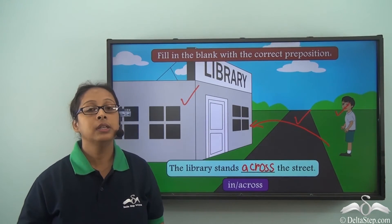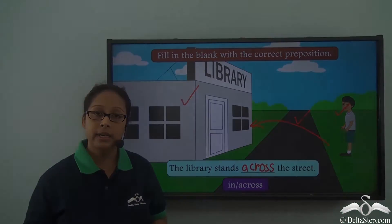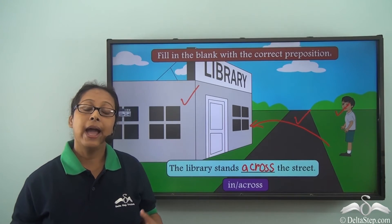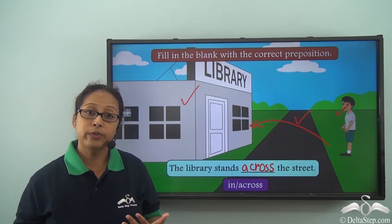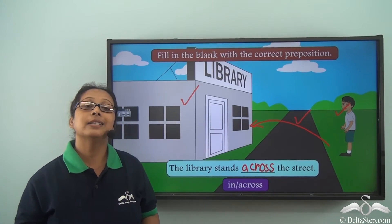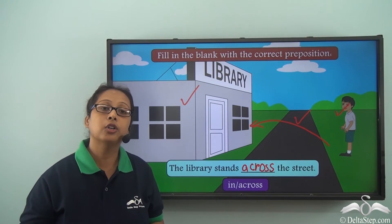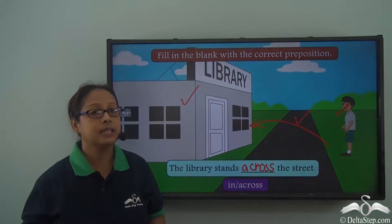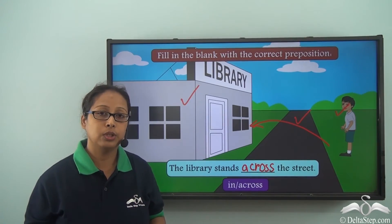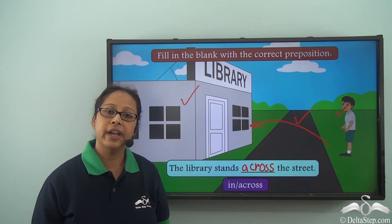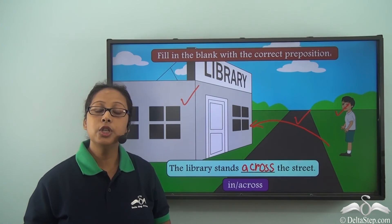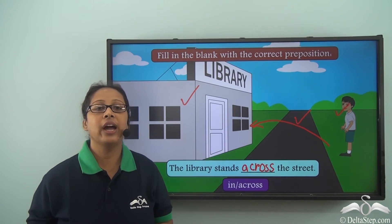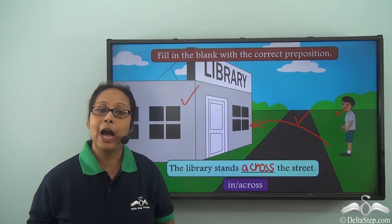Today we have learnt different prepositions. 'In' is used to show something within. 'On' means something being on the surface. And 'across' has many usages: moving from one side to the other or crossing over; connecting one side to the other; meaning throughout; and meaning 'find' as in 'came across'. Try using the preposition 'across' in sentences of your own and see how many you can make.